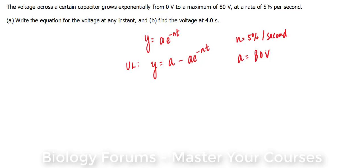Let's plug in what we know. y at any instant is equal to 80 minus 80e to the power of negative 0.05t. The reason why 5% became negative 0.05 is because it's a percentage and it has to be converted into a decimal. The way we do that is by dividing by 100. Finally, we do not know the t.